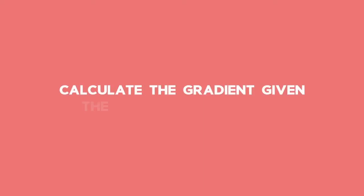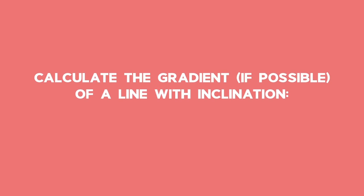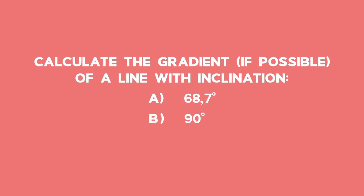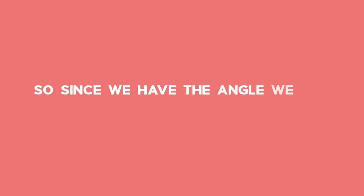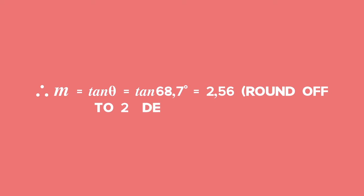To calculate the gradient given the angle of inclination: calculate the gradient of a line with inclination 68.7 degrees for part (a) and 90 degrees for part (b). Let theta equal 68.7 degrees. We know that tan theta equals m, the gradient of the line, so since we have the angle, we can work out the gradient. Therefore m equals tan 68.7 degrees. Enter that into your calculator and you get 2.56, rounded to two decimal places.